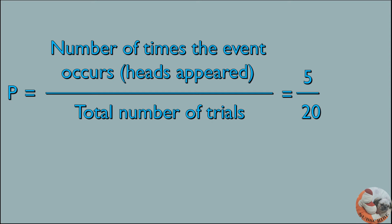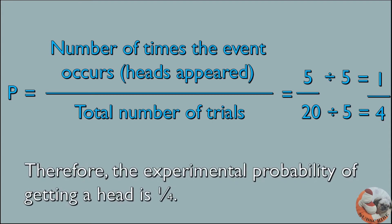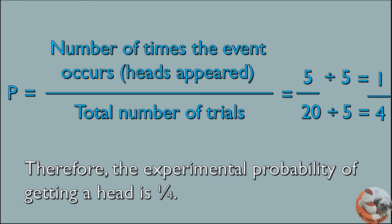Simplify 5 over 20 by dividing both the numerator and the denominator by 5. 5 divided by 5 is equal to 1, and 20 divided by 5 is equal to 4. Therefore, the experimental probability of getting a head is 1 fourth.